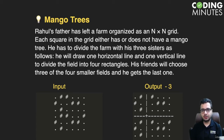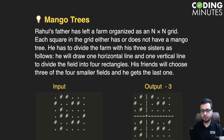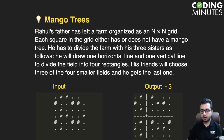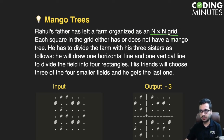Hi everyone, now we are going to take up a challenging problem statement. We will discuss both the brute force and the optimized approaches for solving this problem on 2D arrays. Let us first understand the problem statement: Rahul's father has a farm organized as an N x N grid, so there is a farm in the form of a 2D matrix.